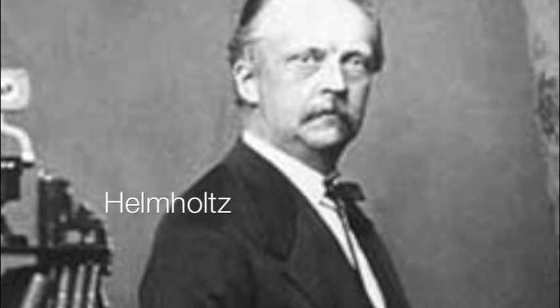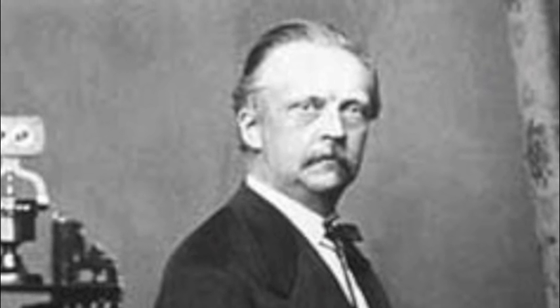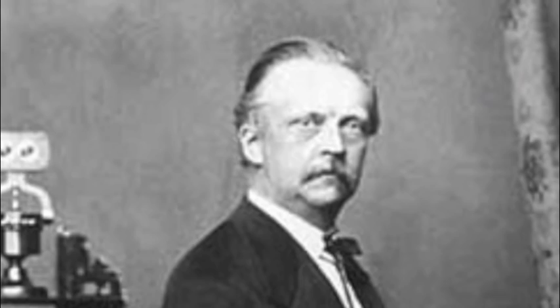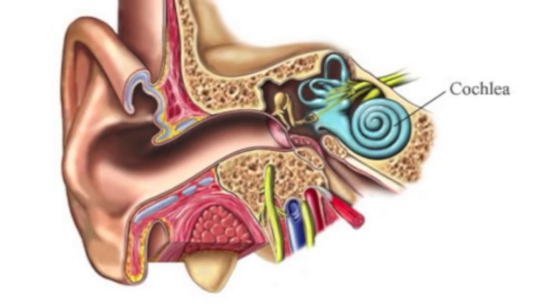Helmholtz was able to demonstrate that combination tones should occur and be detectable when two tones of large enough intensity are played together. But what did he mean by large enough? He meant that the non-linear square term describing the displacement of the cochlea had to overcome the linear term affecting the motion of the cochlea.